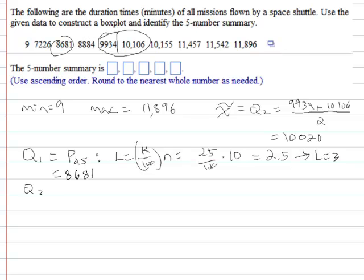And then same thing for Q3, we're going to take l equals 75 hundredths times 10, which is going to be 7.5. We're going to, again, round that up to l equals 8. And then, so we take that eighth value, which is 11,457.